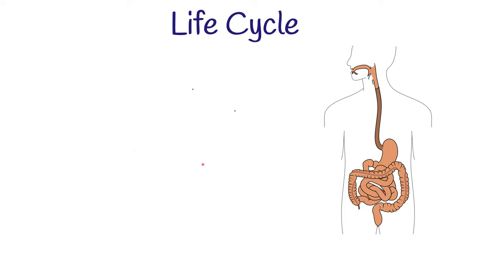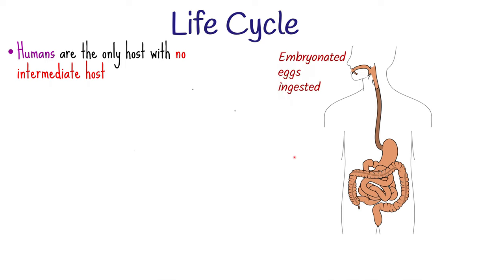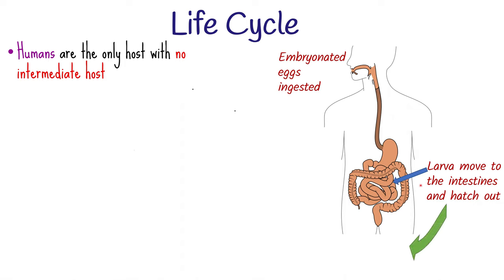The life cycle of Enterobius vermicularis is not complicated. Humans are the only host of the parasite — it has no intermediate host and does not undergo any systemic migration. Initially, infection is acquired through ingesting embryonated eggs containing larvae, often via contaminated fingers or inhalation. These eggs are swallowed and move to the intestines where they hatch. While in the intestines, they molt in the ileum and enter the cecum, where they mature into adults. It takes anywhere between two weeks to two months from ingestion of eggs to development of an adult female ready to lay eggs.